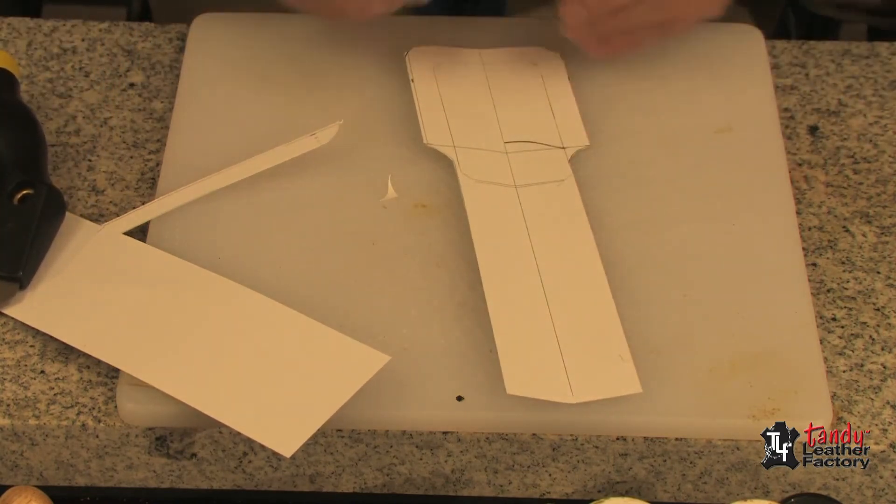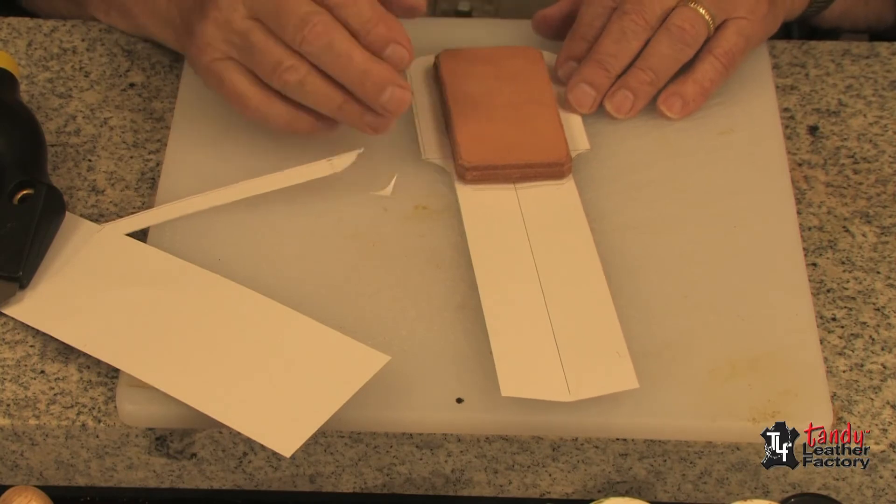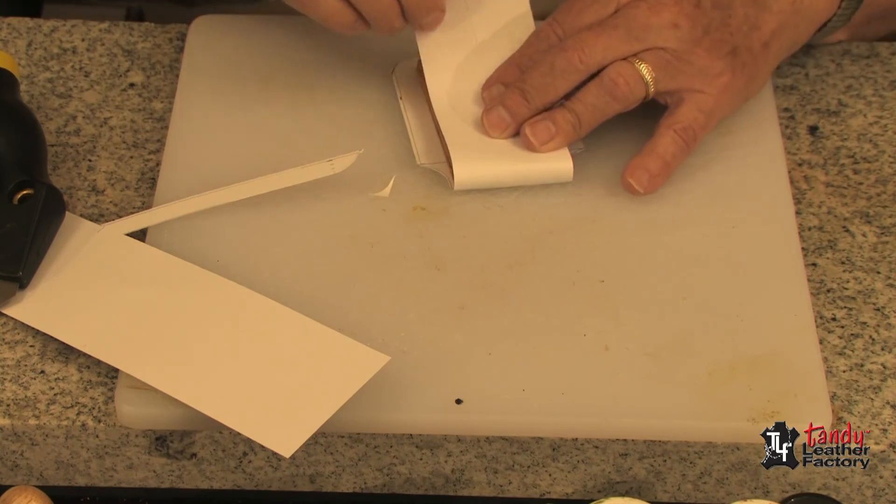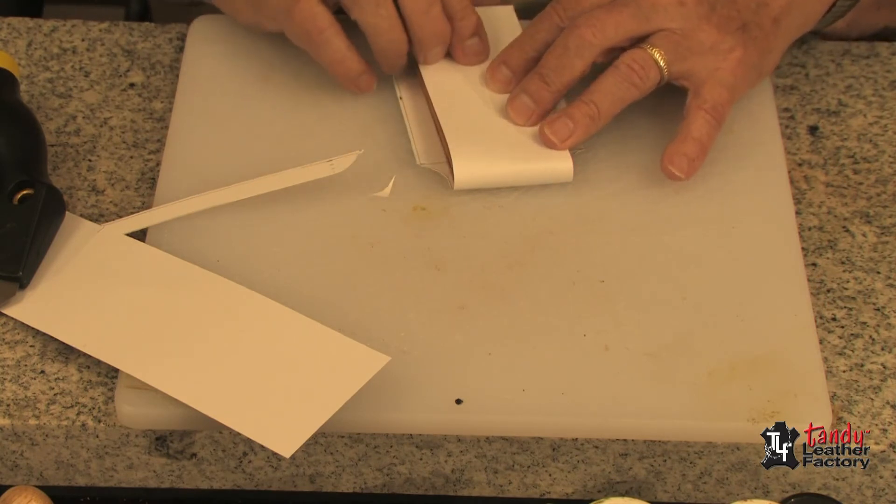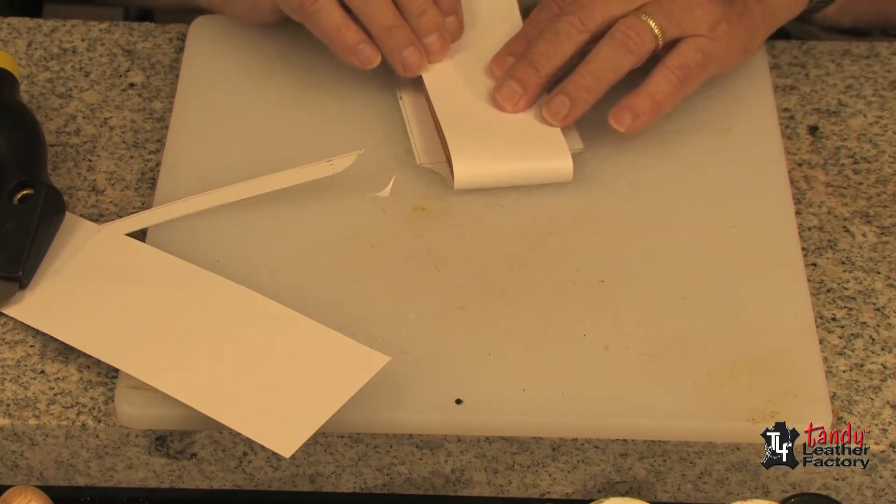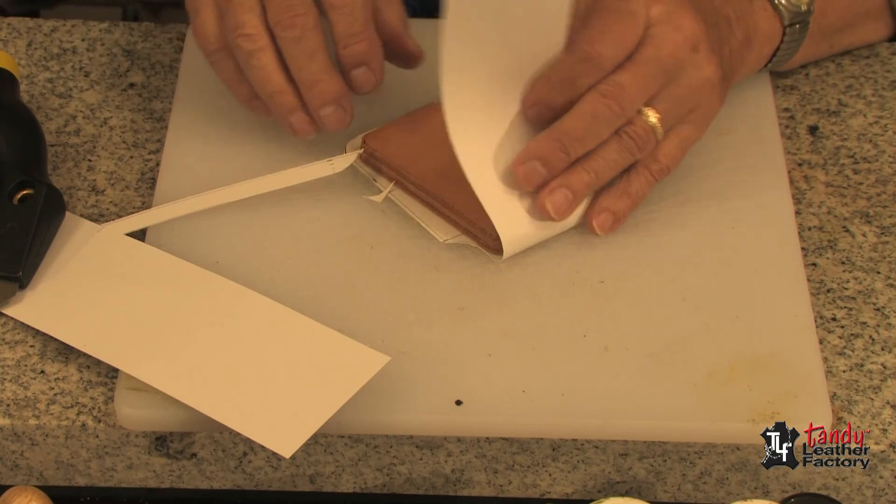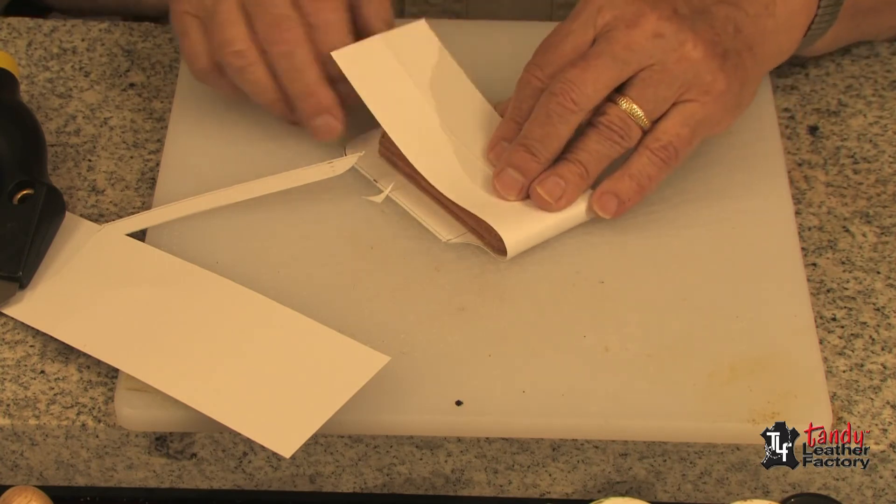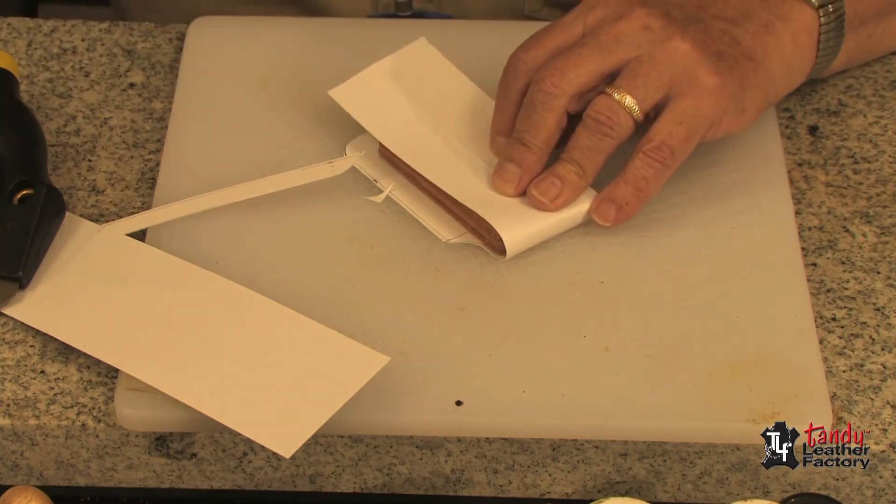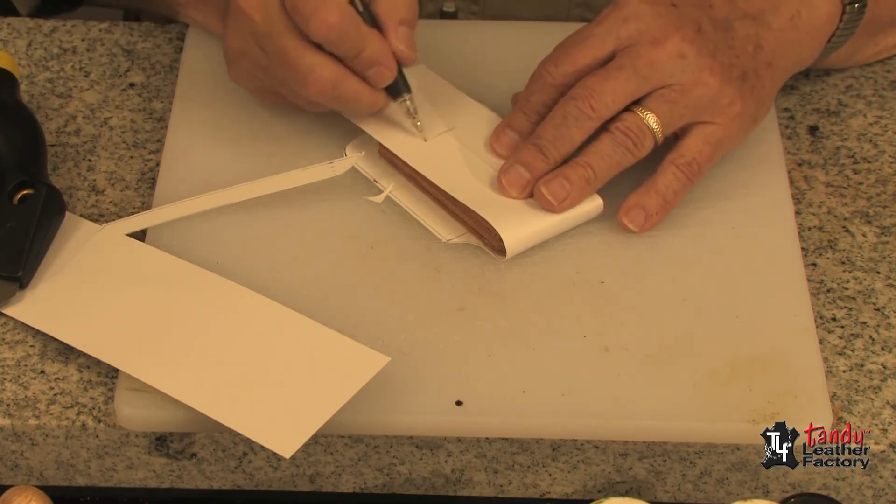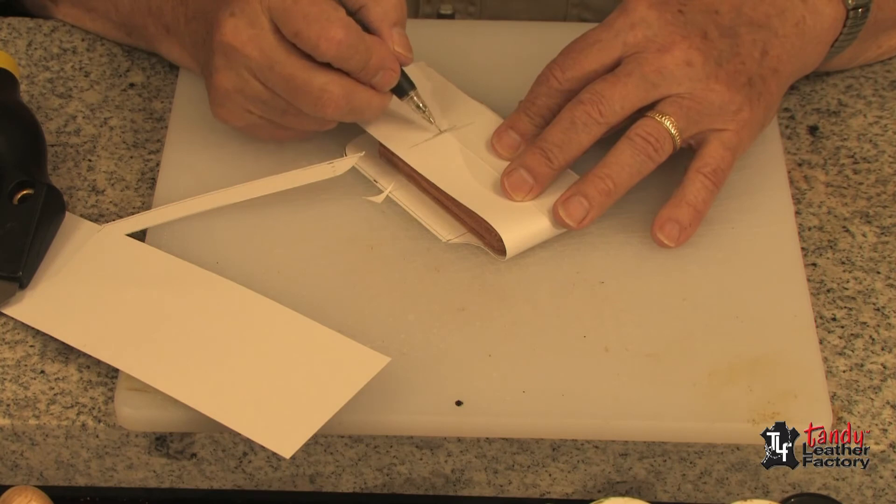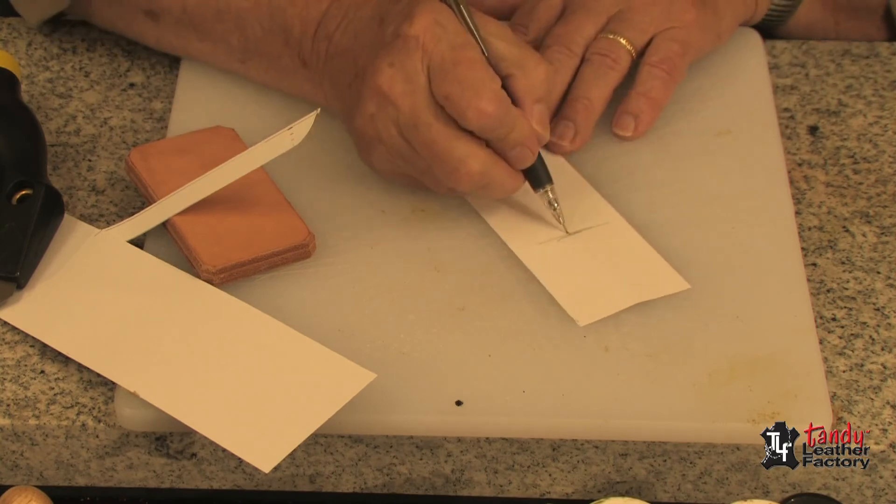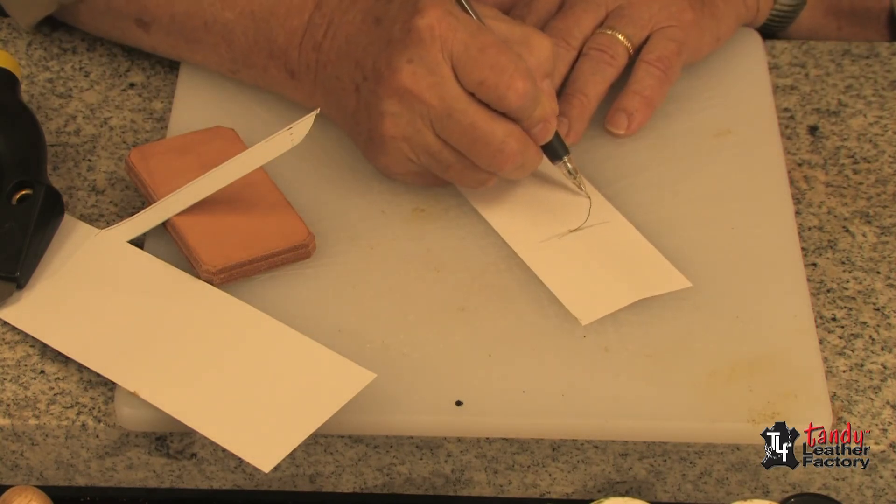Now at this point we will put our model phone back in and we will design the flap. The flap will come over as you see, and we can take it down as far as we want. This will depend somewhat on the kind of closure we're going to use. In this case I'm going to use the Sam Brown post, so I will place my model phone and I will design the flap to come about here.